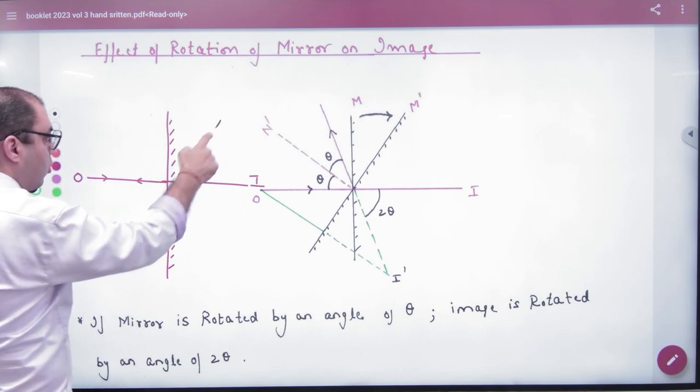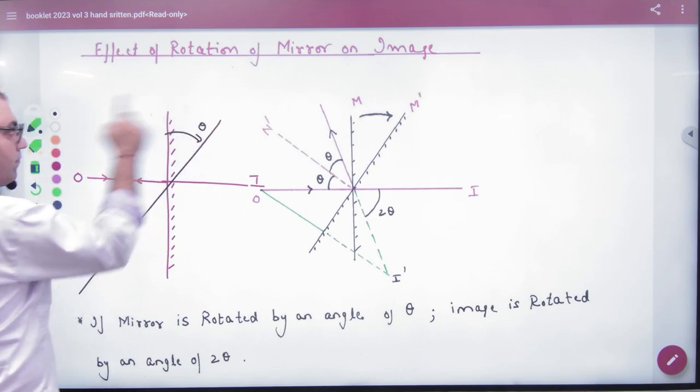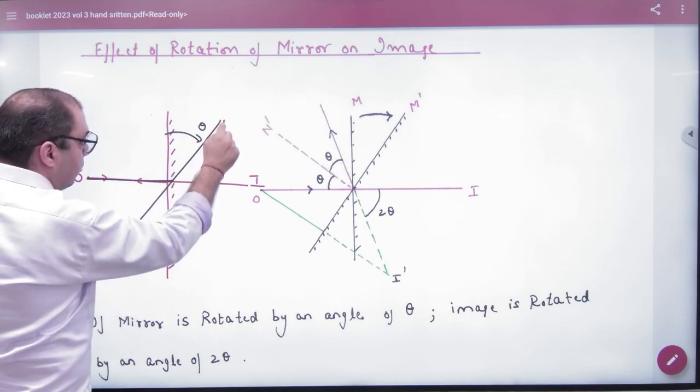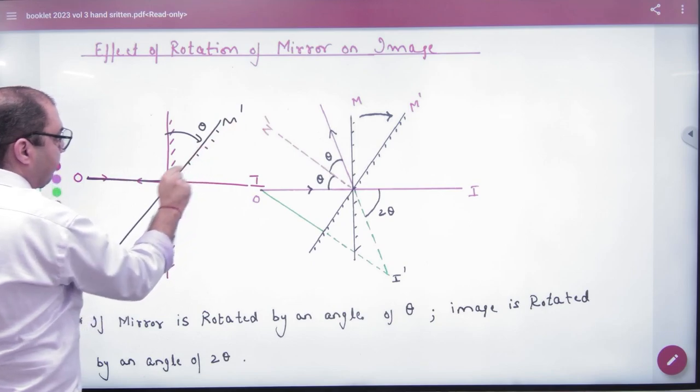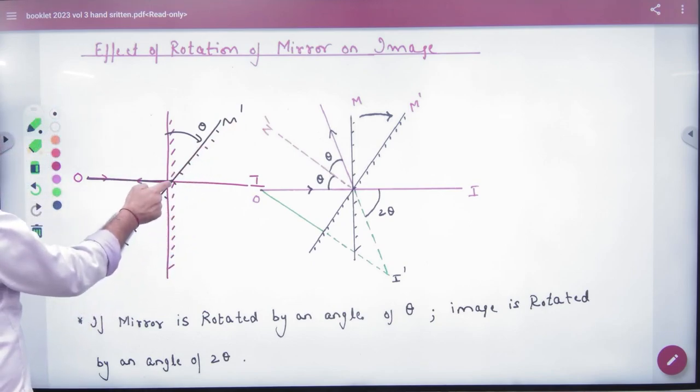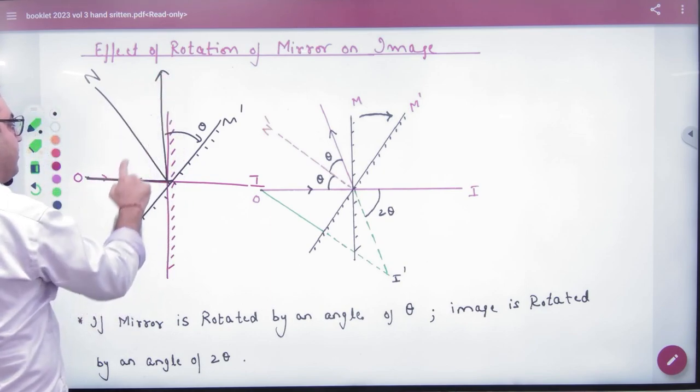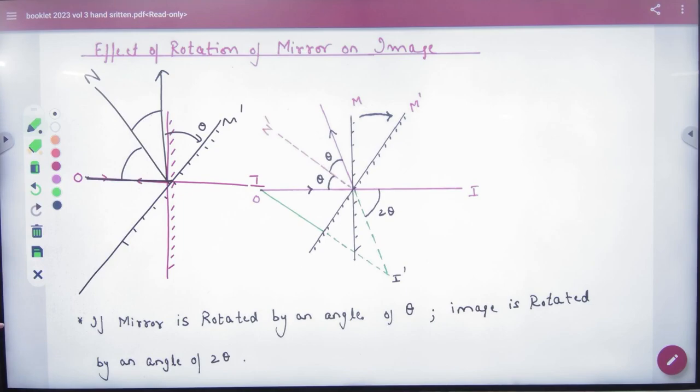Someone has rotated the mirror by an angle of theta. Now think that this object, if you think this mirror is a new mirror M', is normal. M' will go from the normal here. So ray will go from the object and the normal will go from here such that the angle of incidence is equal to the angle of reflection.